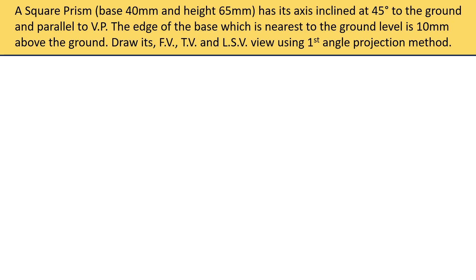Hello everybody, welcome back. In today's video, we will be solving an engineering drawing question. The question says: a square prism, base 40 mm and height 65 mm, has its axis inclined at 45 degrees to the ground and parallel to VP. The edge of the base which is nearest to the ground level is 10 mm above the ground. Draw its FV, TV and LSV view using first angle projection method.